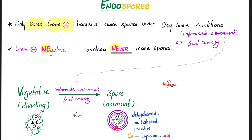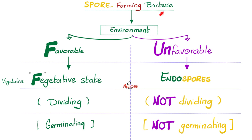Why does the bacteria do this? Because it's protective — it protects the bacteria from many unfavorable conditions. So, as a gram-positive bacteria, when the environment is favorable, I am in the vegetative state, which means I'm dividing and germinating. But if the conditions are unfavorable, I'll make a spore. I will not divide and I will not germinate. I will be dormant.